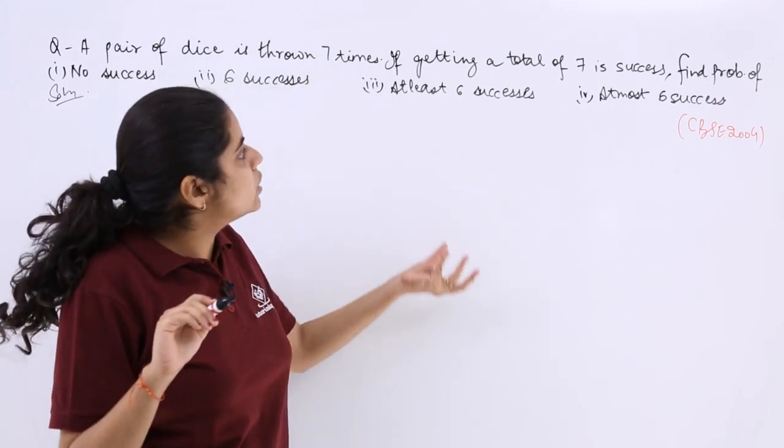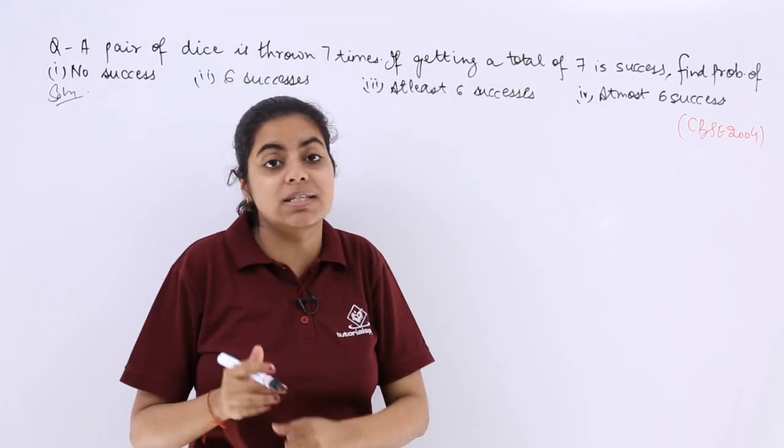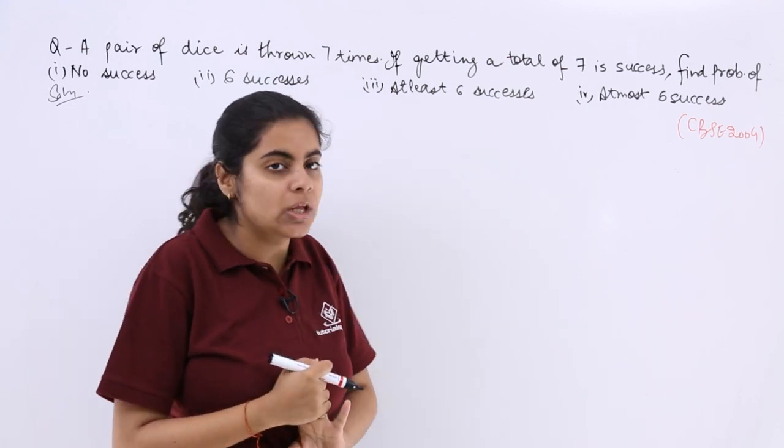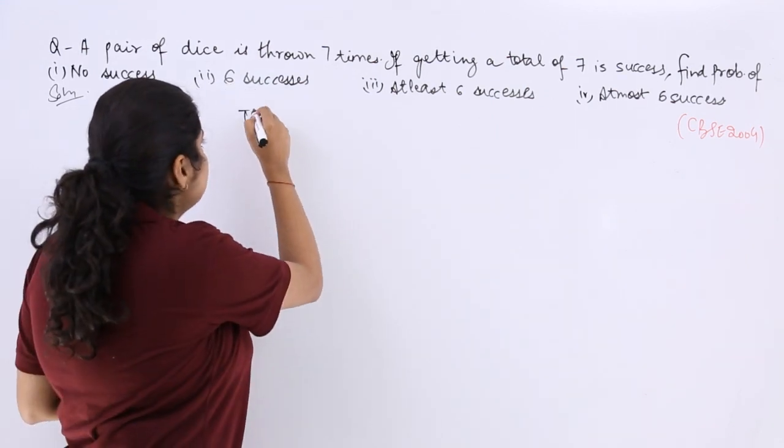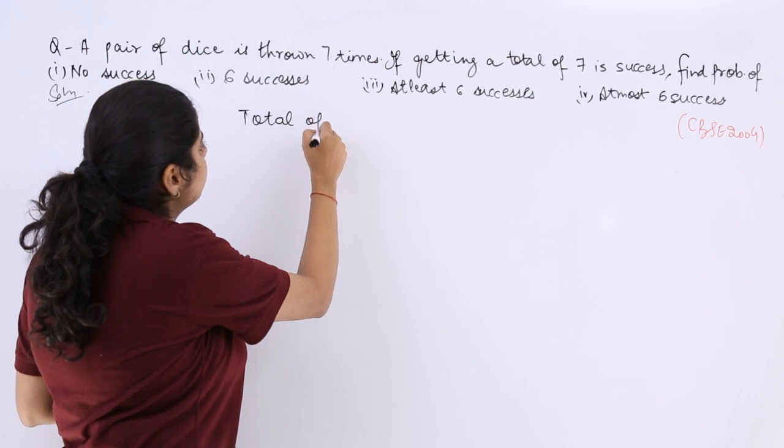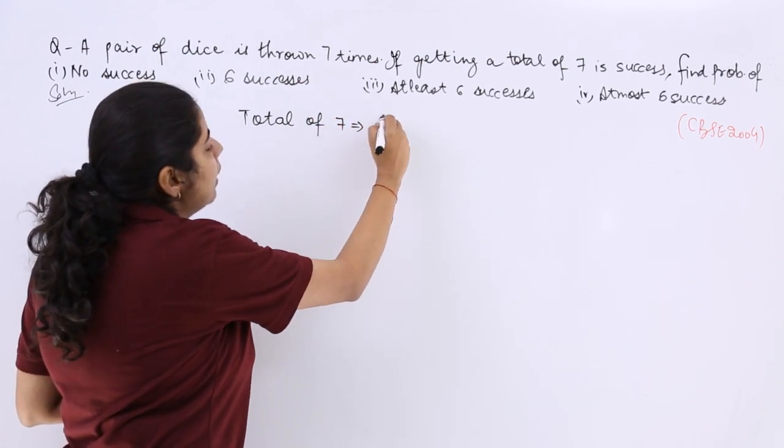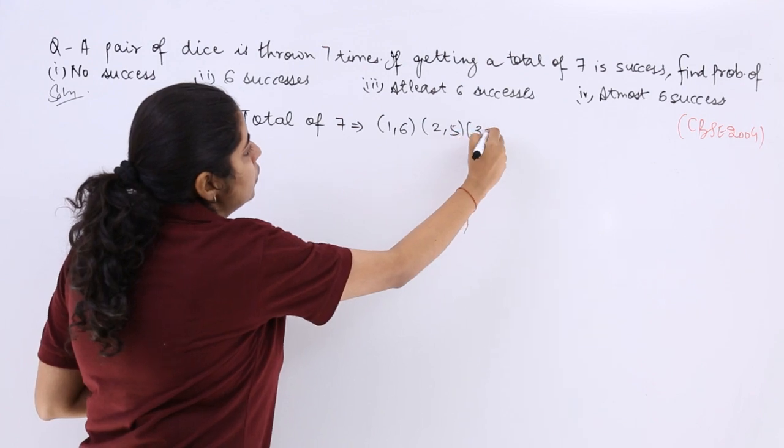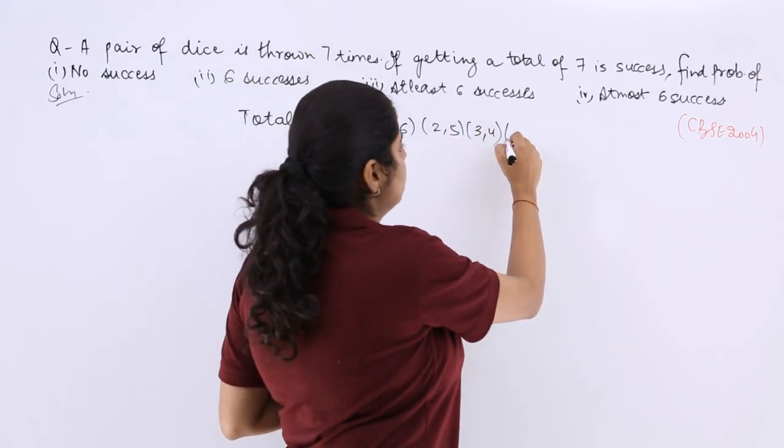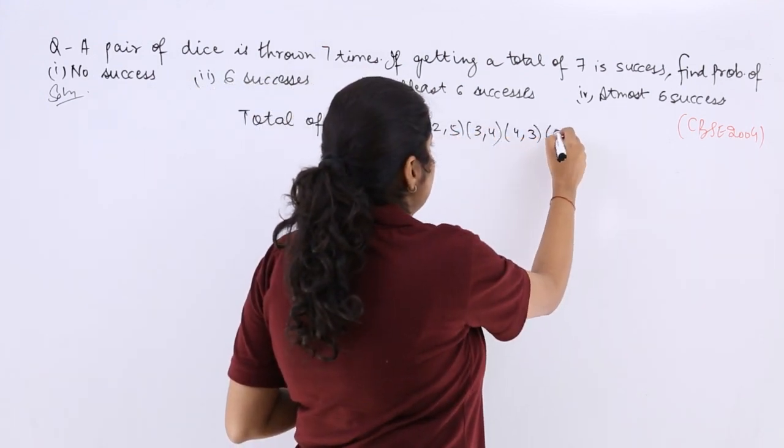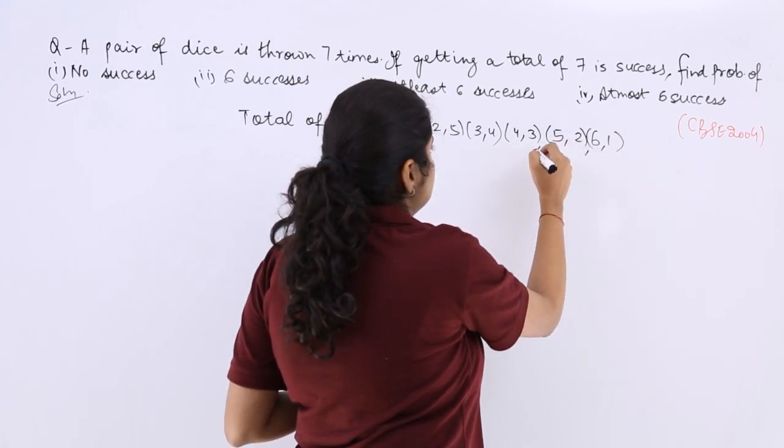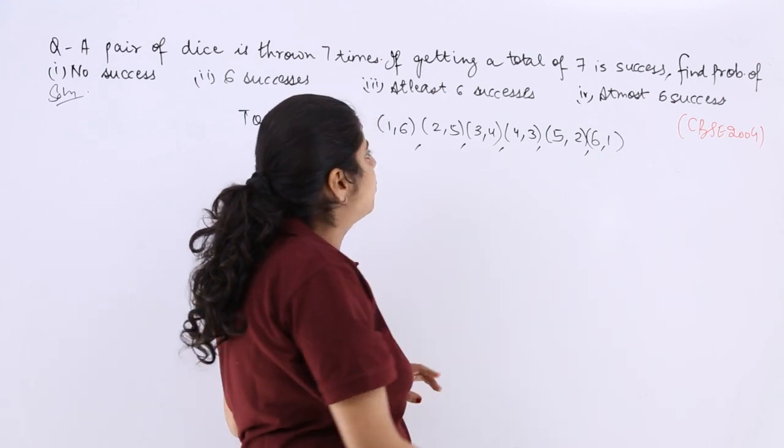So it has been said that getting a total of 7 is a success. So what is the sample space wherein we can get a total of 7? The total of 7 can be achieved in the following manner: (1,6), (2,5), (3,4), (4,3), (5,2), (6,1) cases. So these are how many cases? 1, 2, 3, 4, 5, 6 - 6 cases.